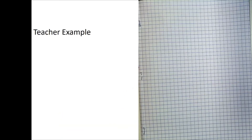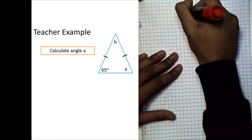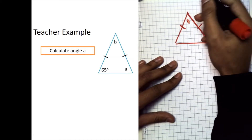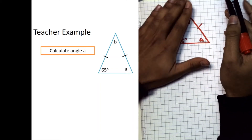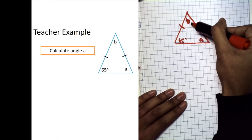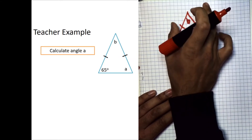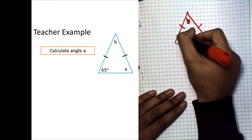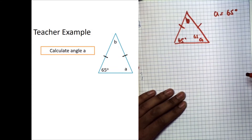Let's look at an example. We're told to calculate the size of angle a. We have two equal lines marked, an angle b, an angle a, and a known angle of 65 degrees. We now have two missing angles and only one piece of information. The key here is identifying the base — the base connects the two equal-length lines, so this is an isosceles triangle and the base angles are equal.